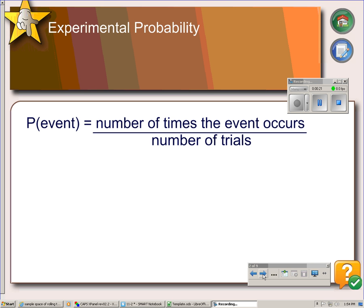The formula for finding an experimental probability is the probability of some event, which we would define, is equal to the number of times the event occurs divided by the total number of trials.